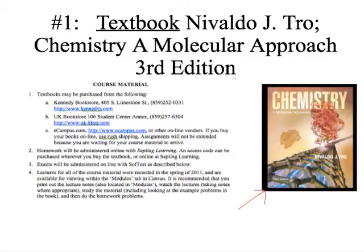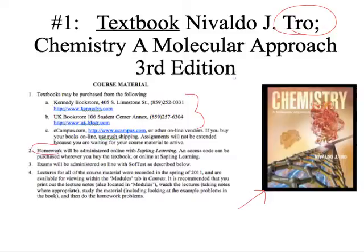Number one: you need a textbook. This is the textbook for the course — you'll hear me refer to problems in Tro, your textbook. You'll hear me mention certain pages and tables you need to know. You can get it at the Kennedy Bookstore, the UK Bookstore, or eCampus. When you order the textbook, you can also get your homework account, which is Sapling. You'll need an access code, which can be purchased with the textbook.